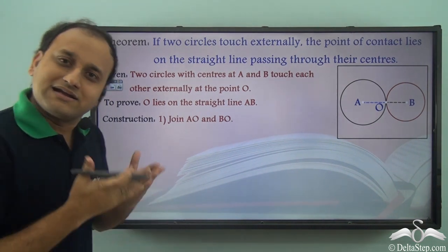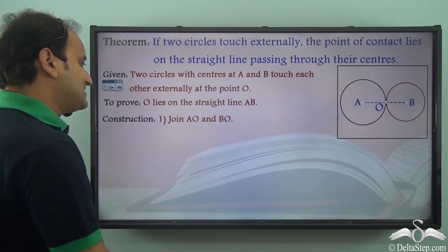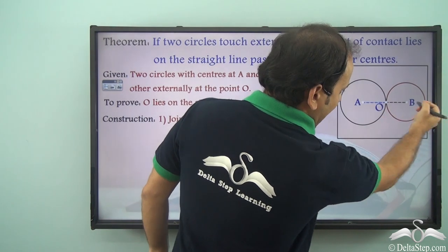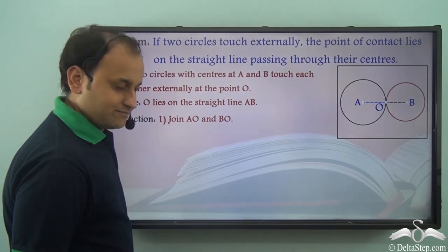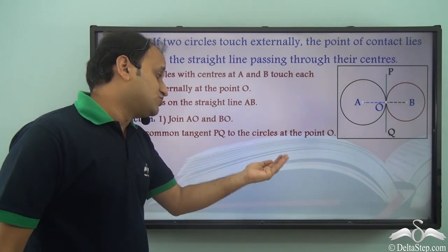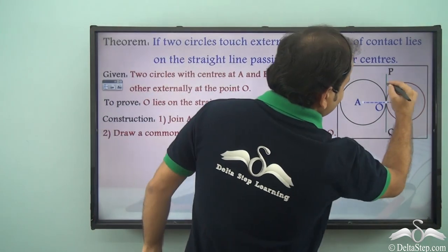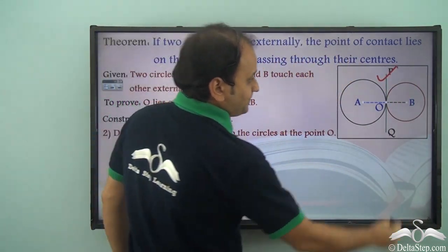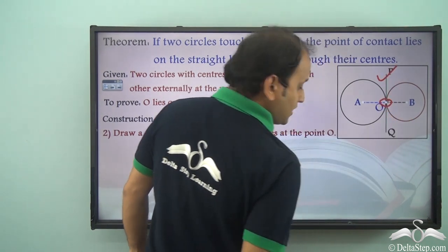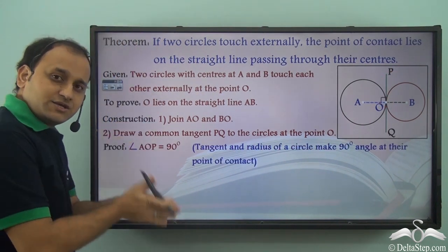Construction: we join AO and BO. Next, we draw a common tangent PQ to the circles at point O. This is a common tangent PQ, and it is common because it passes through the common point of contact.